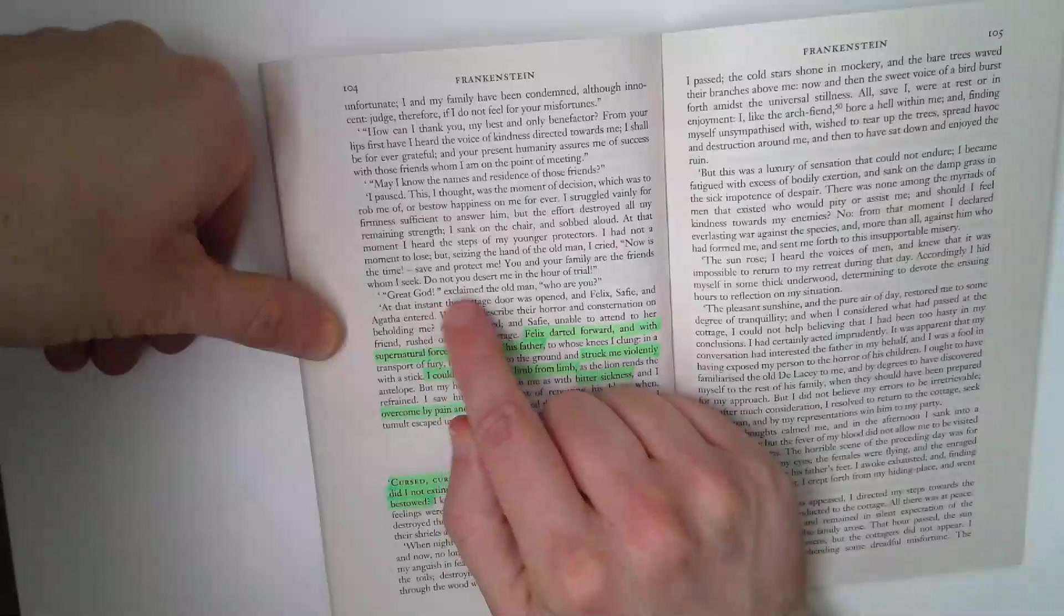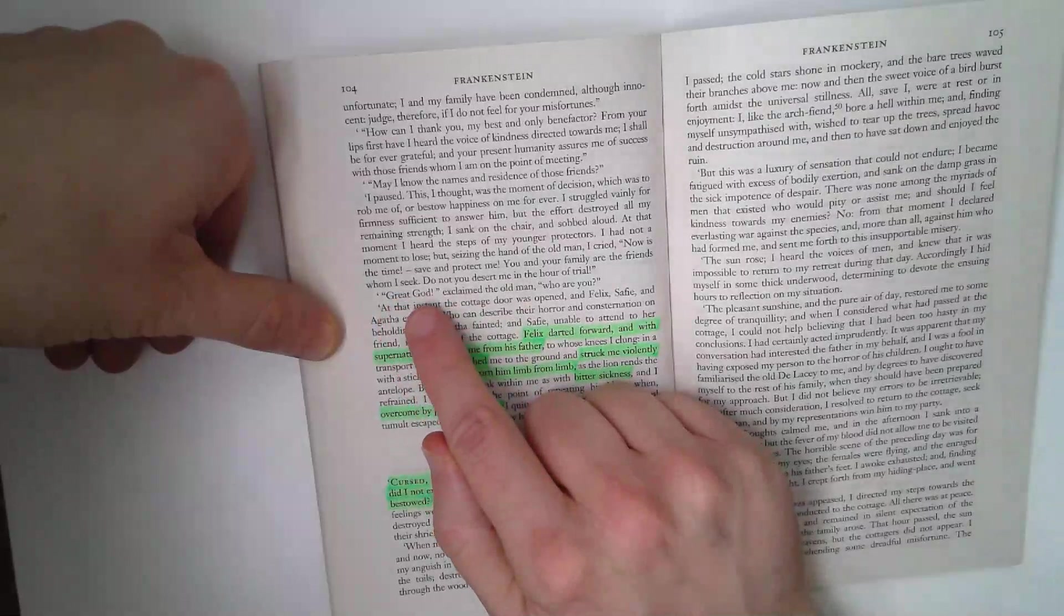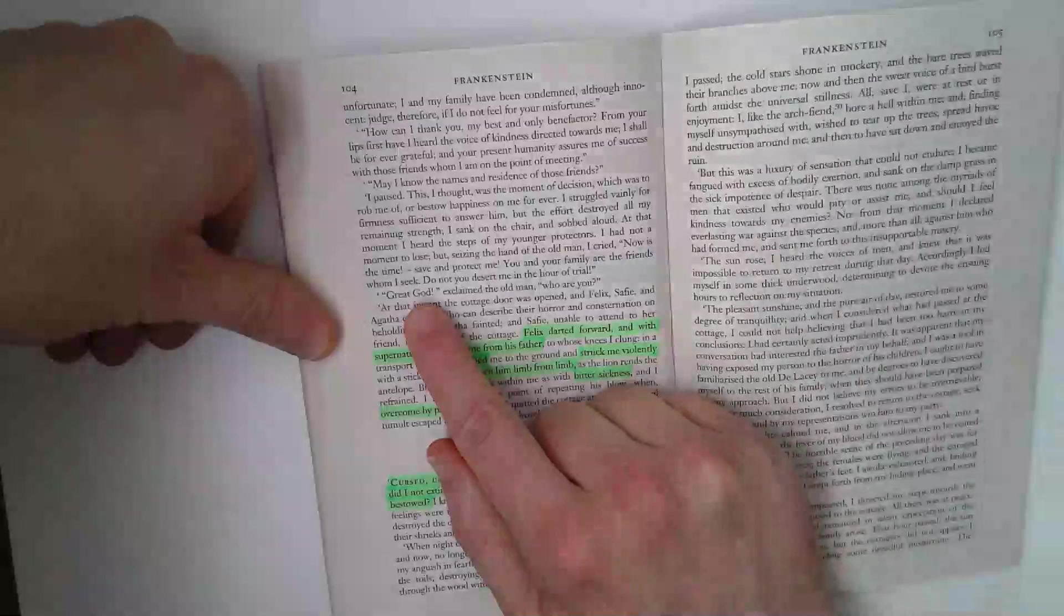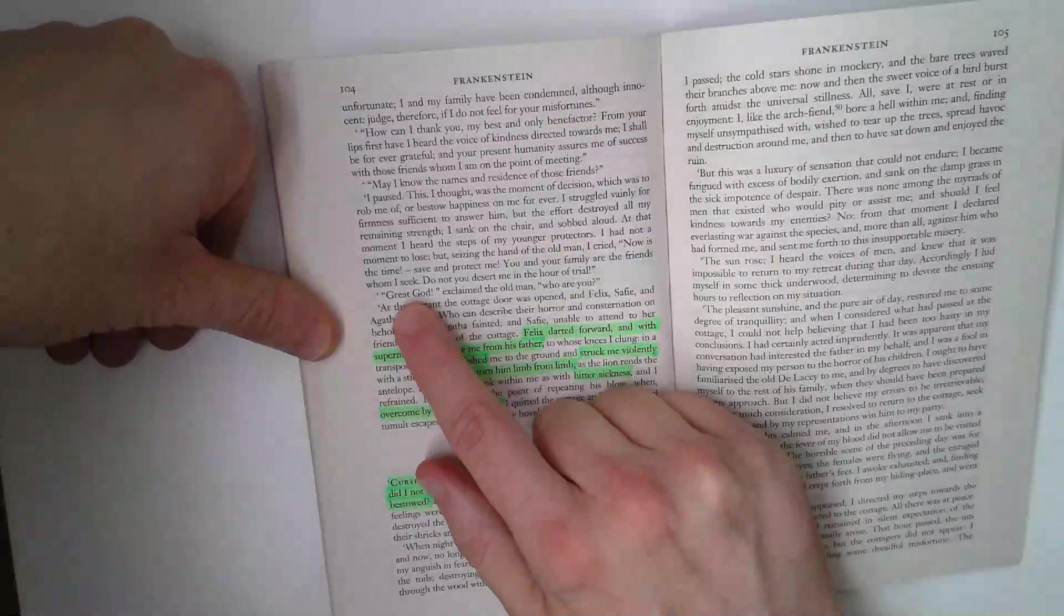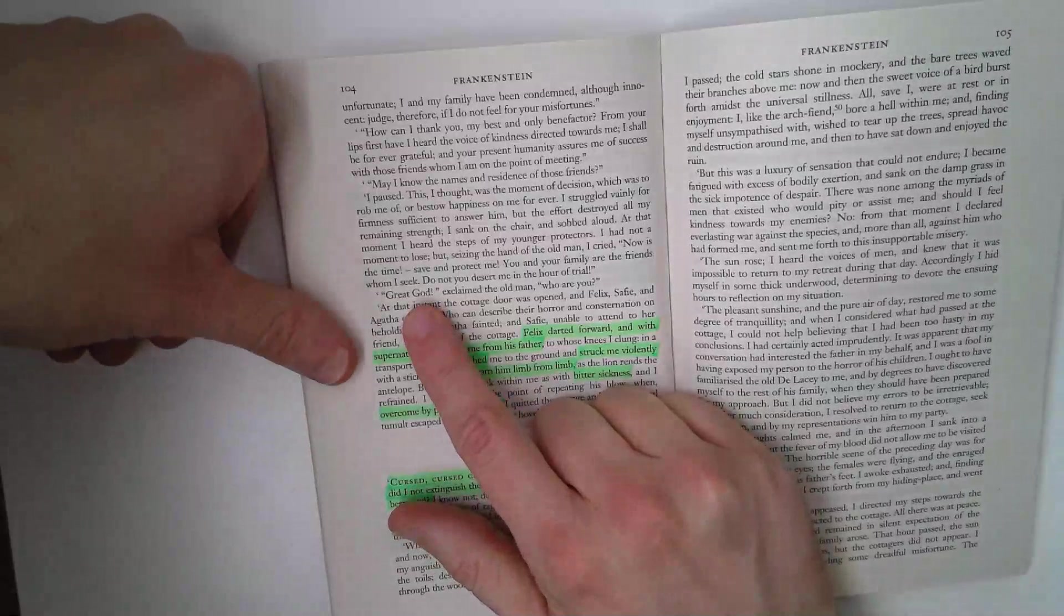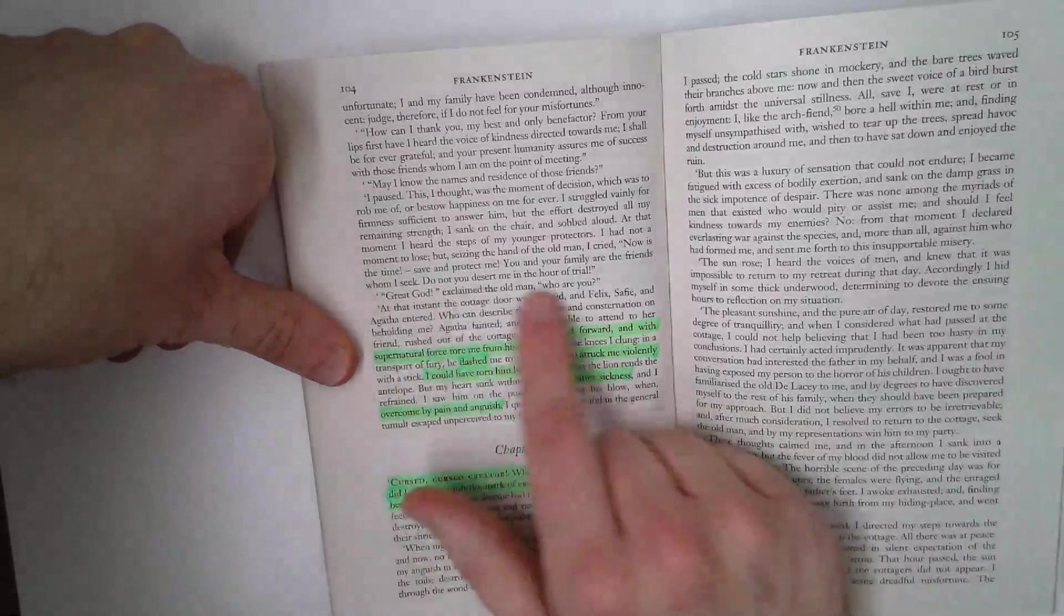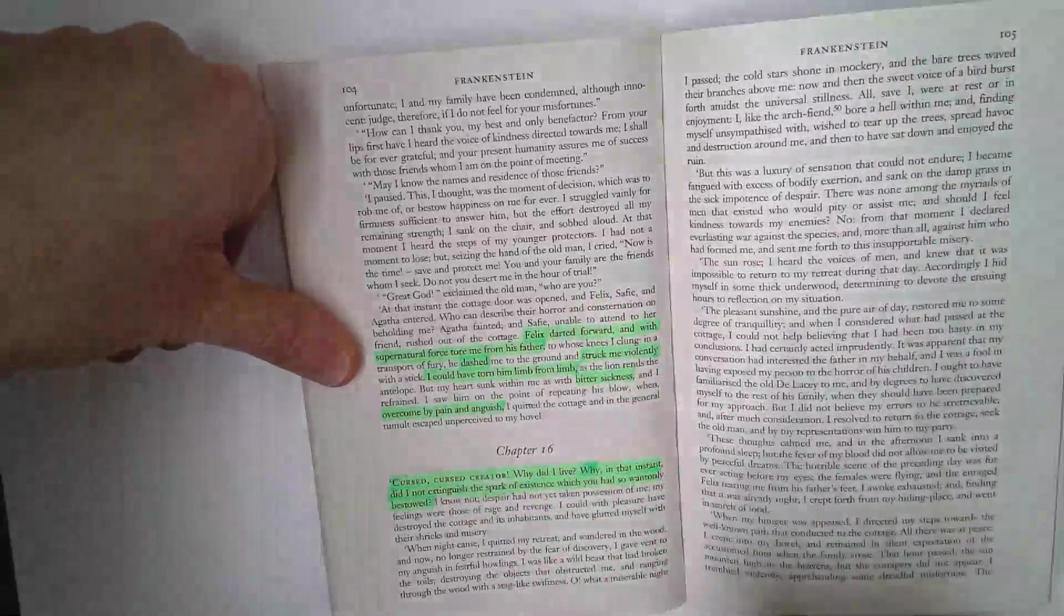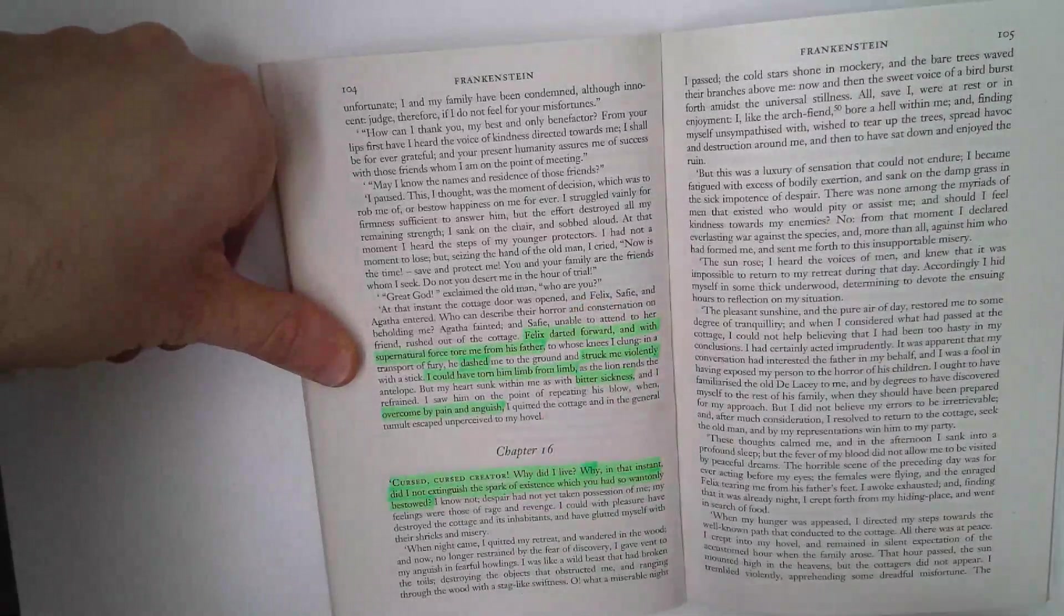Even the blind man is using language we've seen Victor Frankenstein use. Great God. At the moment of creation, when describing the creature's horrific appearance. And the old man who can't see, great God, who are you? Even the old man is worried of the power the creature has.